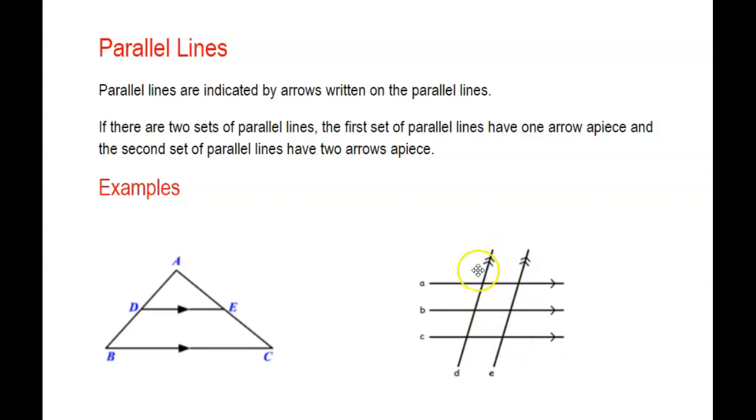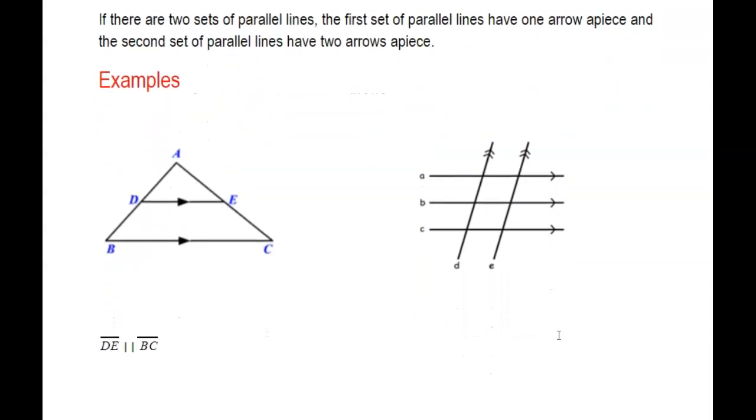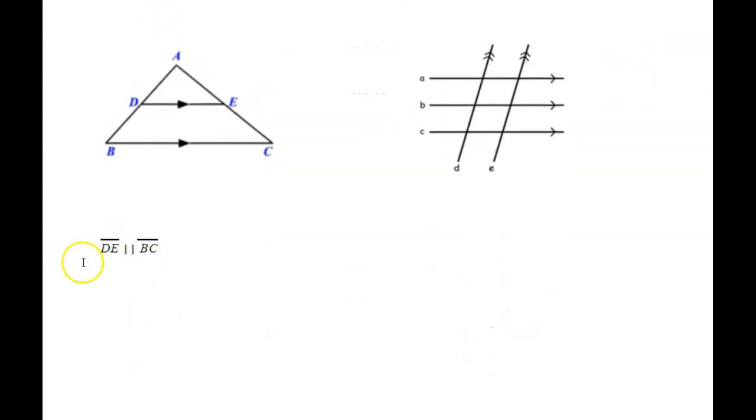We would say here that line D is parallel to line E. So I put two arrows on both, because lines A, B, and C are all parallel to one another, and those have single arrows.